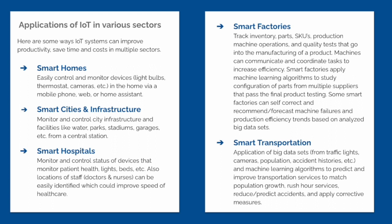You can have smart cities and infrastructure, where the city uses IoT systems to monitor infrastructure — it could be the amount of water going into people's homes, use of parks, stadium lighting, or how a garage is being used — and gather all that data from a central station. It could also be smart hospitals, monitoring patient location and staff location to improve the speed of healthcare.